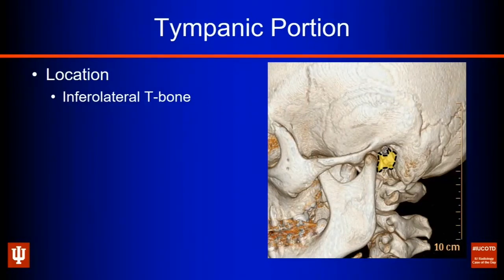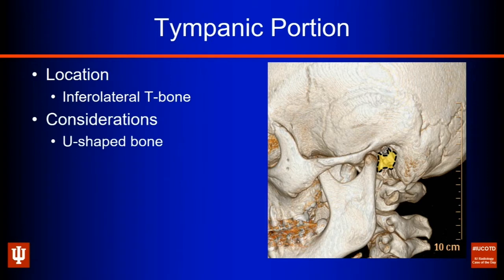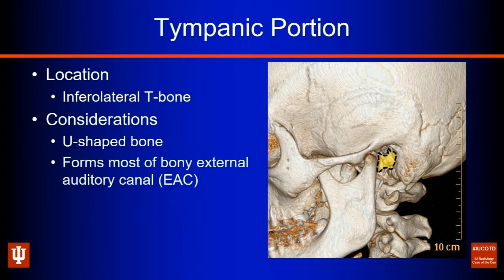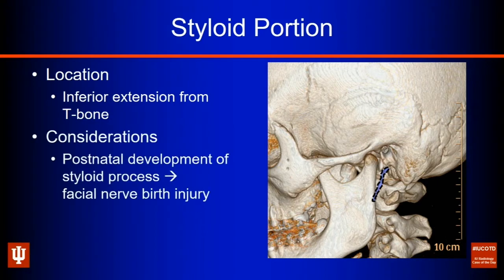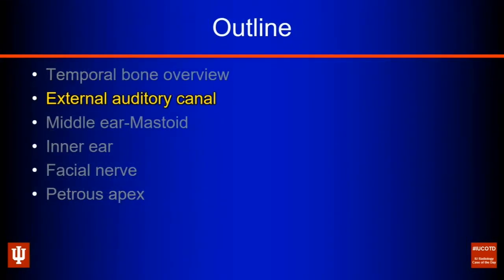The next segment is the tympanic segment, found along the infralateral temporal bone. This is a U-shaped piece of bone that forms most of the bony external auditory canal, shown here in yellow. Lastly, we have the styloid portion — our inferior extension of the temporal bone. This also develops postnatally, which is why the facial nerve may occasionally be prone to birth-related trauma.